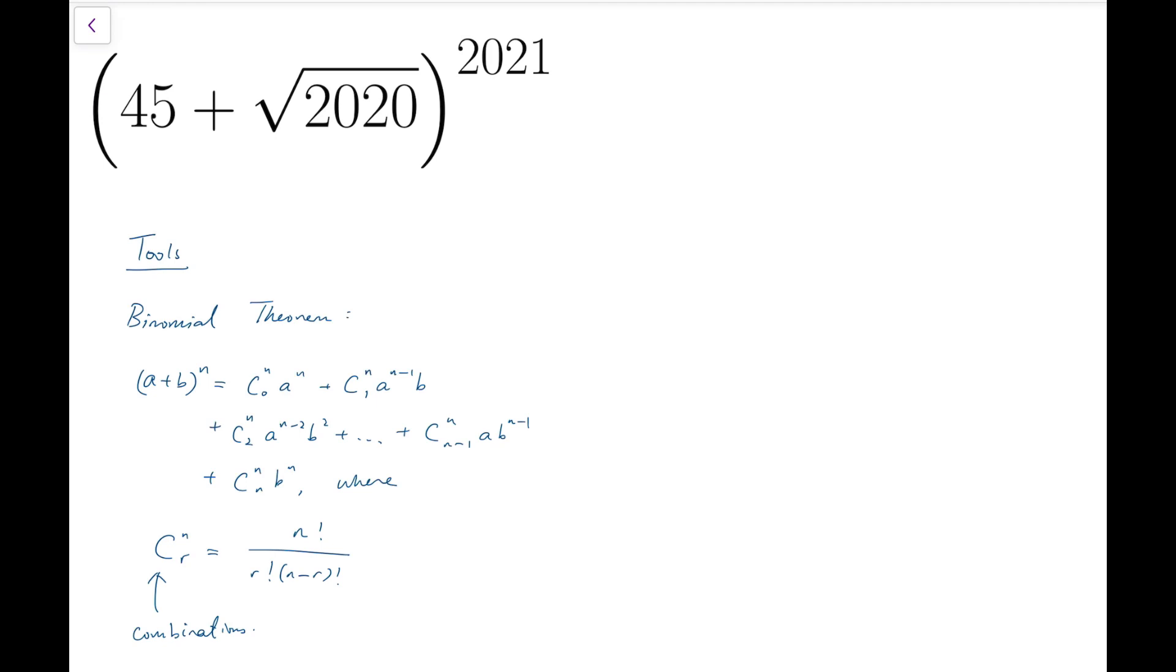The number 45 + √2020 is a very complicated number because this root is actually irrational. It's roughly 44.944, and it's impossible for us to bring this to the power of 2021 when we use a calculator.